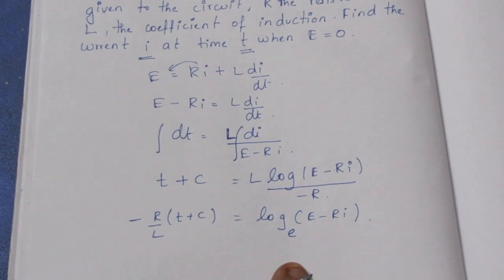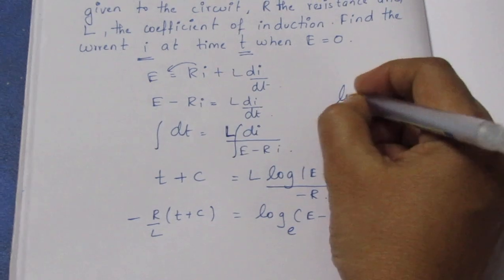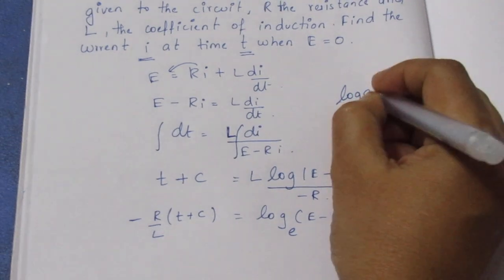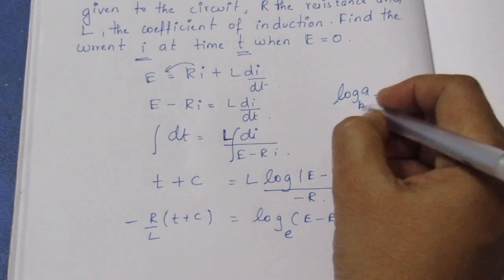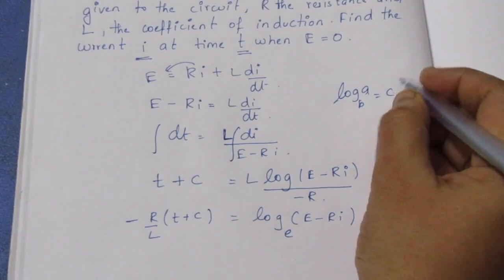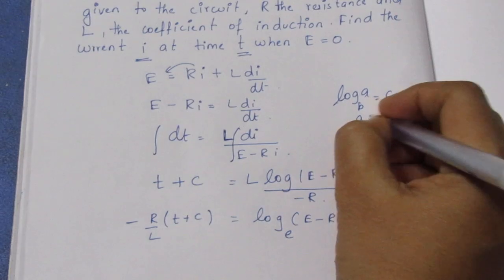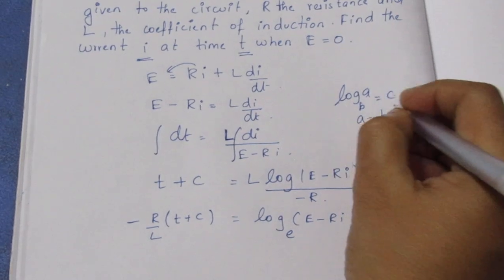Now we will convert to exponent form. If log base b of a equals c, then we put it to the other side, so a equals b to the power c.